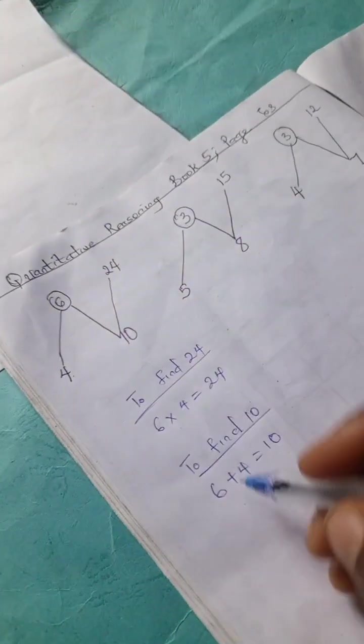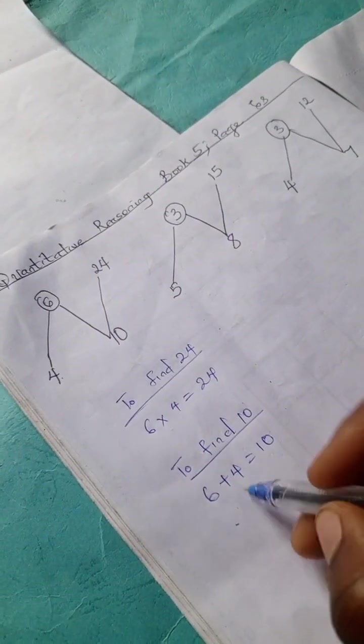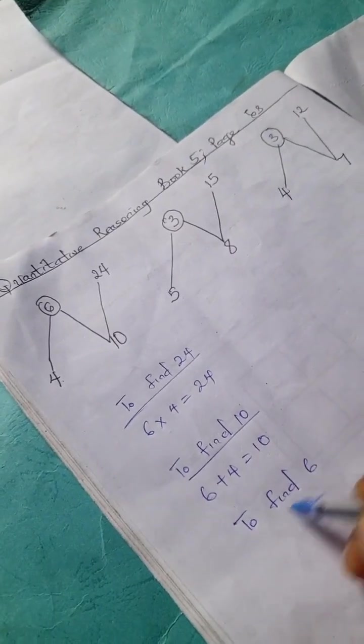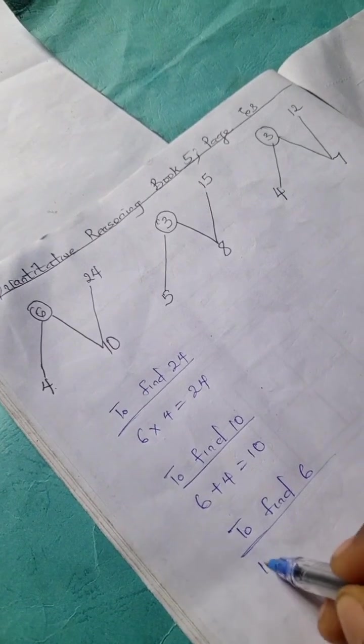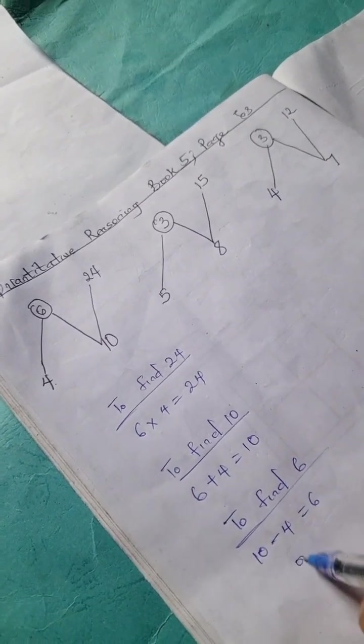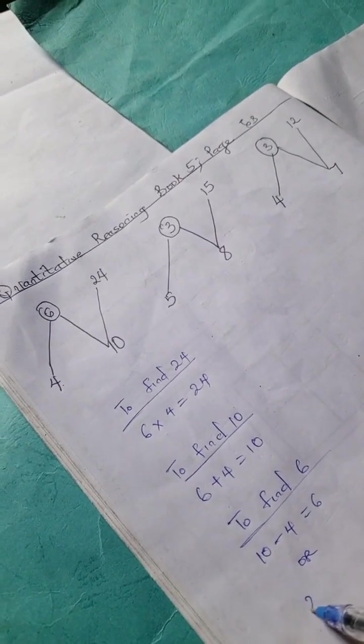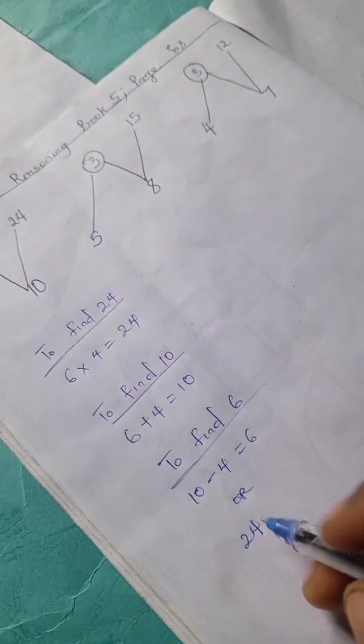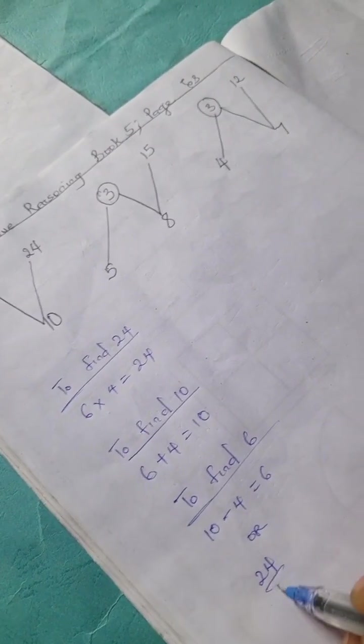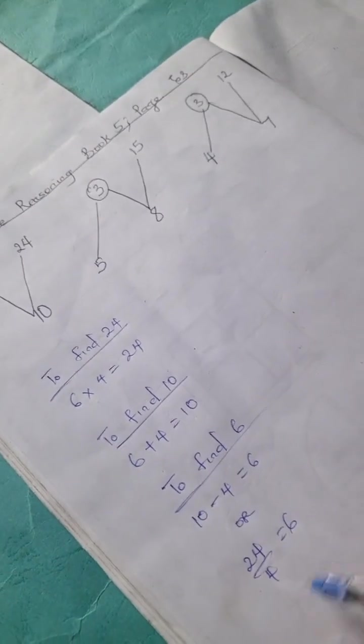Alright, so if we want to find 6 or 4, we either add or subtract. So to find 6, we can say 10 minus 4 is 6 or we can have 24 divided by 4 is 6.